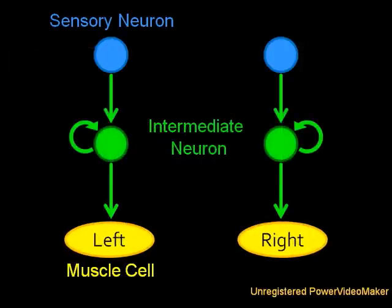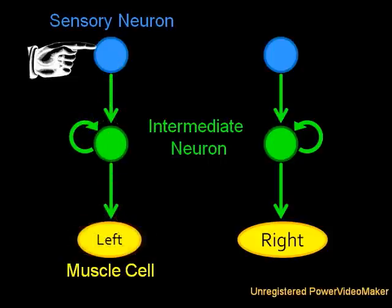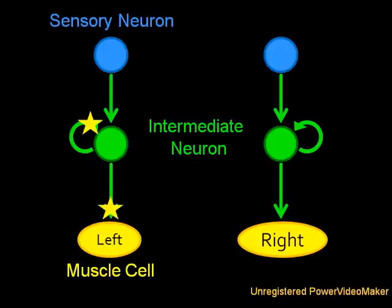Now, an input on either side not only causes that muscle to contract, but because the intermediate neuron continues to excite itself, the muscle remains contracted. Hence the circuit remembers the stimulus long after it's gone away.